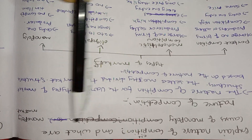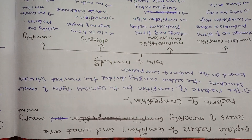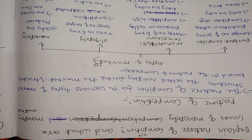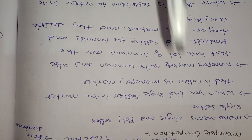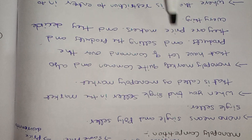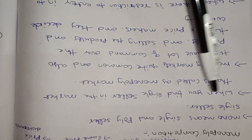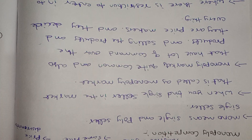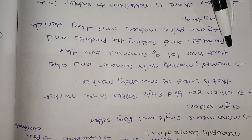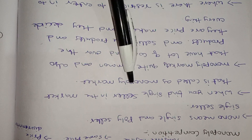Let's look at the causes of a monopoly market. Monopoly — 'mono' means single seller, 'poly' means seller. So monopoly means a single seller. Only one seller is in the market, selling only one product. When you find a single seller in the market, that is called a monopoly market.